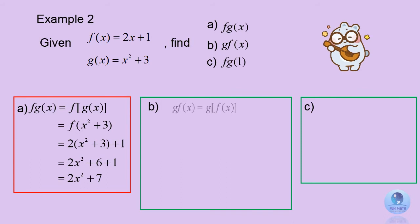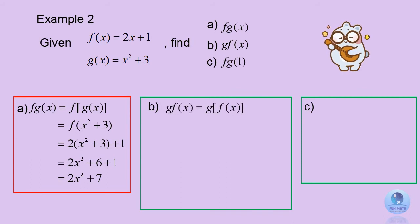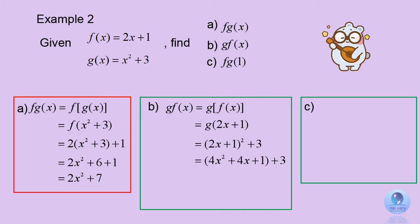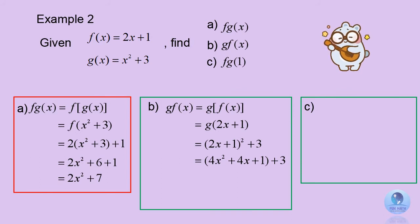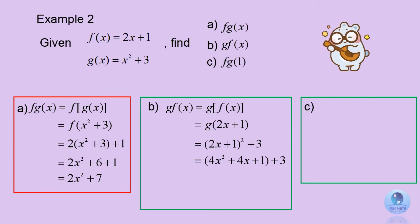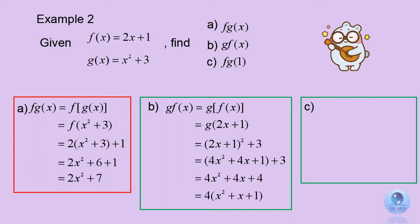Question B: find g of f of x. You need to substitute f of x, which is 2x plus 1, into g of x. You get 2x plus 1, all squared, plus 3. And finally, you get the answer 4x squared plus 4x plus 4.